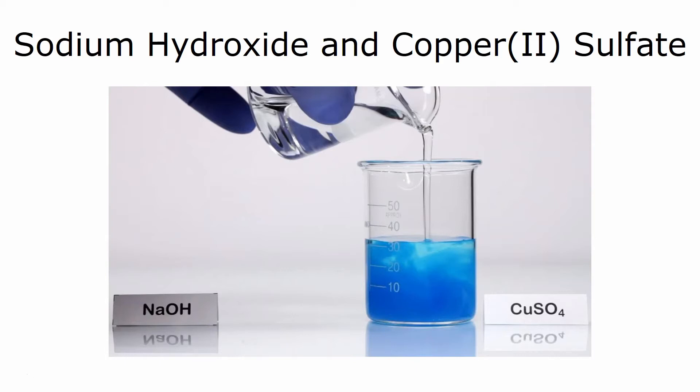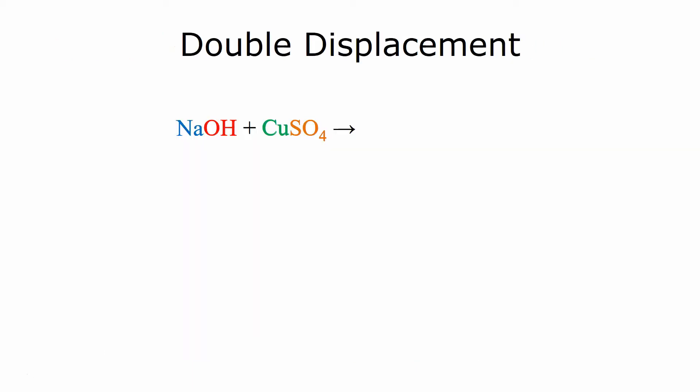But what exactly is going on here? Well, this is what's known as a double displacement reaction. For instance, in the previous example, we had sodium hydroxide and copper sulfate. What happens is that once the two solutions are mixed, the ions swap places.